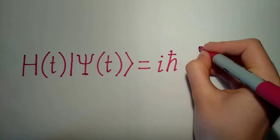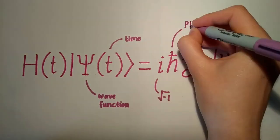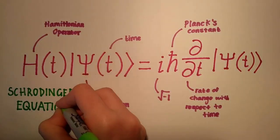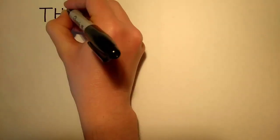The Schrödinger equation defined a particle's wave function, and Heisenberg's principle called uncertainty into question.